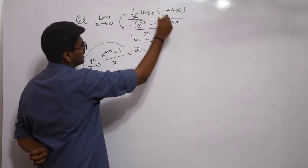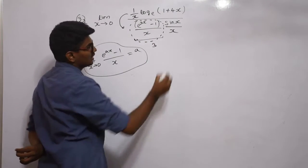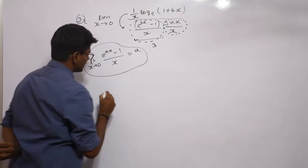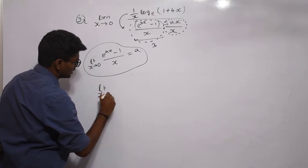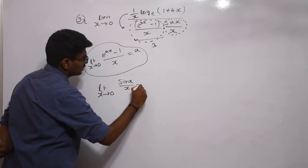If I multiply and divide by x—x in the numerator and x in the denominator—what happens to sin(x)? We have the standard case: when limit x tends to 0, sin(x)/x equals 1.